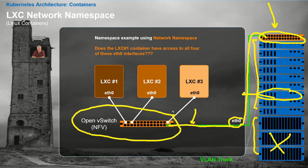Open vSwitch is capable of layer two, layer three, layer four, and load balancing. In this particular case, we're going to configure it as simply a layer two switch. We are then going to run virtual ethernet cables called bridge internals from the Open vSwitch up into network namespaces, which is the subject of this particular diagram.